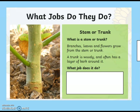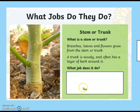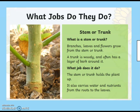Moving on to the stem or the trunk — trunk is often the word we use when it's a tree. Branches, leaves, and flowers grow from the stem or the trunk. On trees, the trunk is woody and often has a layer of bark around it — that's the brown bit that looks a little bit wrinkly. The stem holds the plant up and carries water and nutrients from the roots in the soil all the way to the leaves.